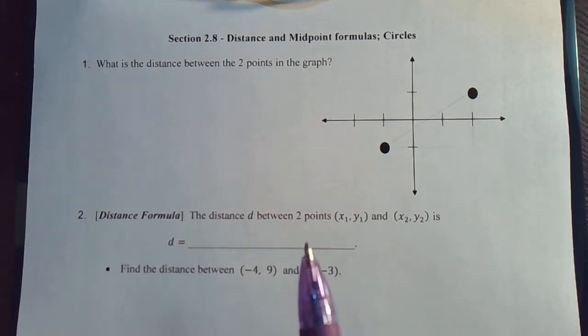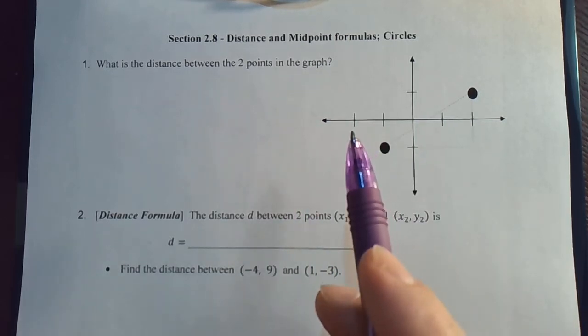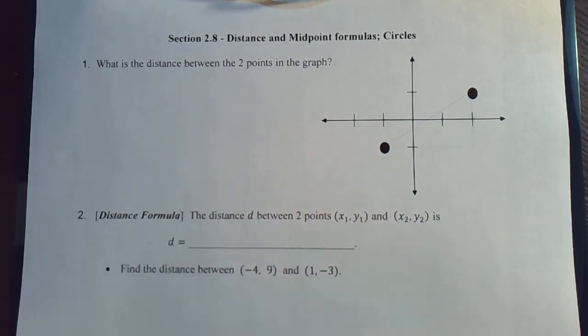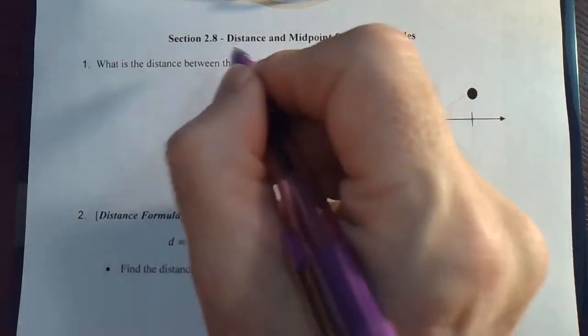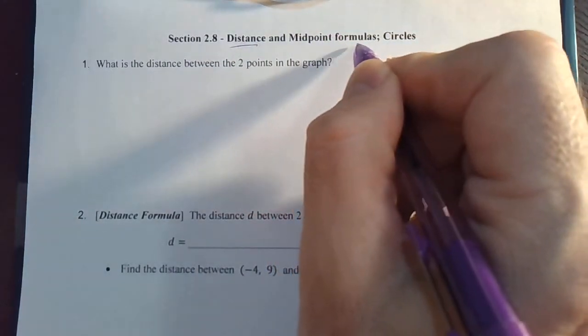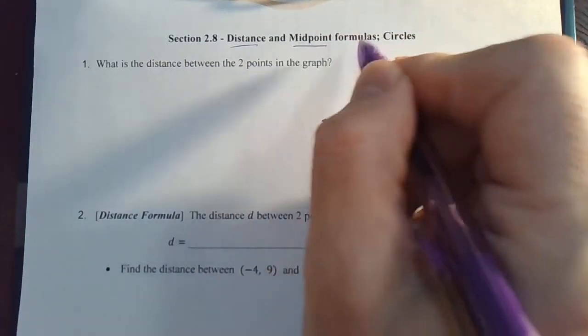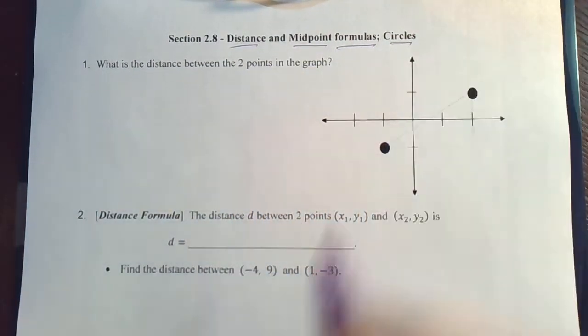The last section in our chapter on functions is going to take a little bit of a left turn. There are going to be about three formulas in this section that you'll need to memorize. What we're talking about in this section is distance formulas, a distance formula, a midpoint formula, and then we're going to talk about circles.